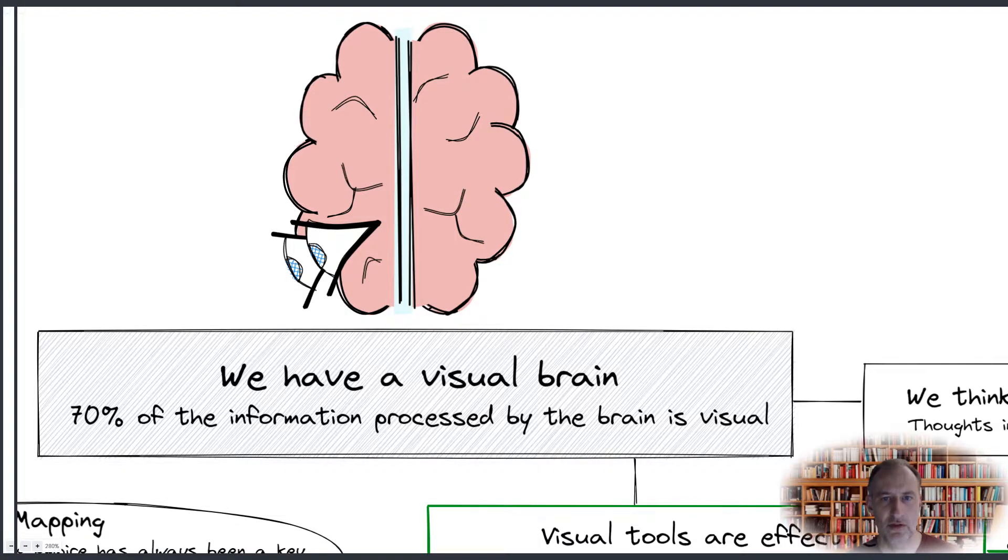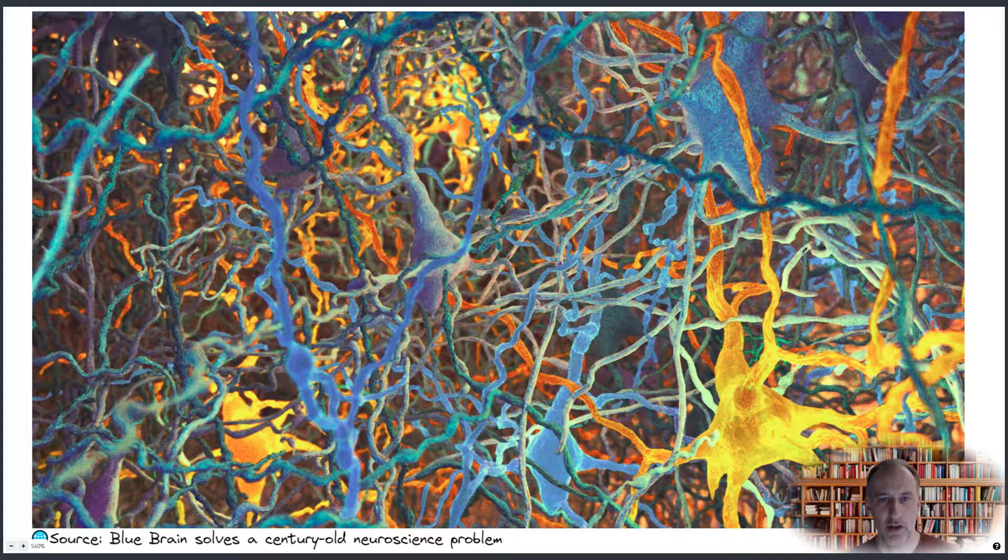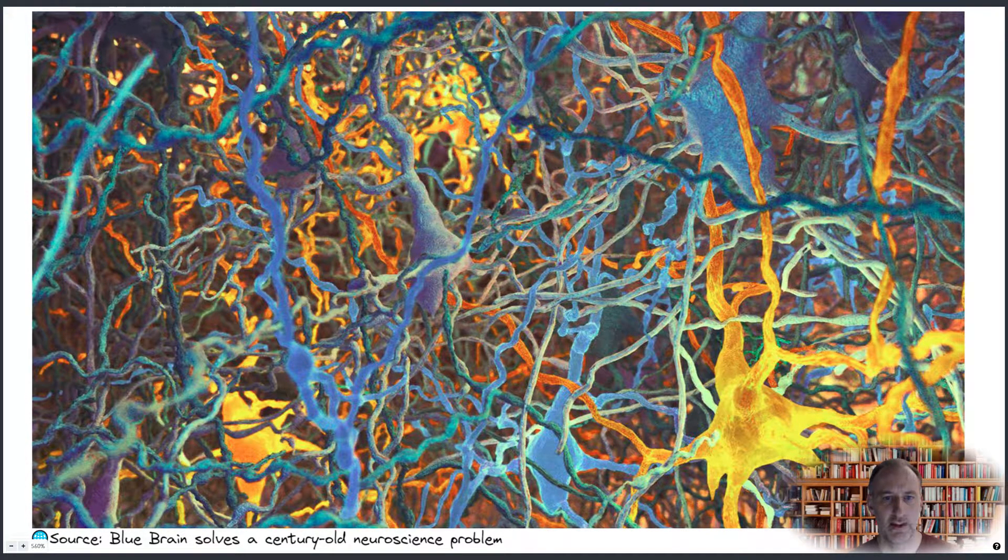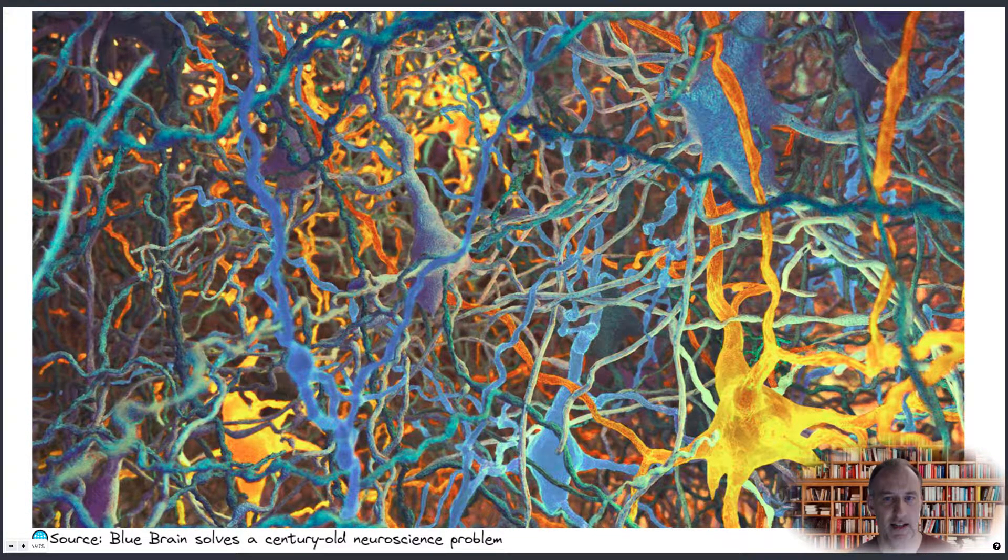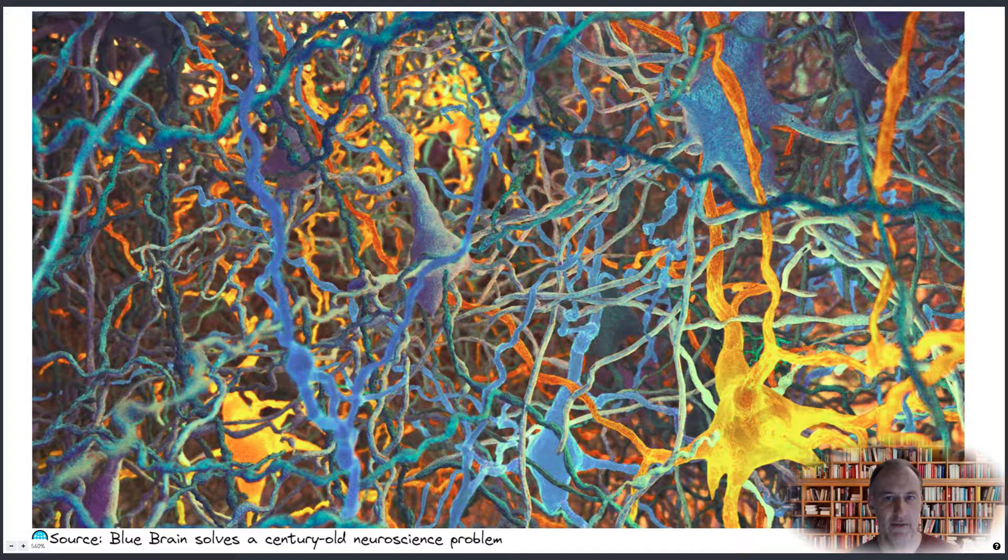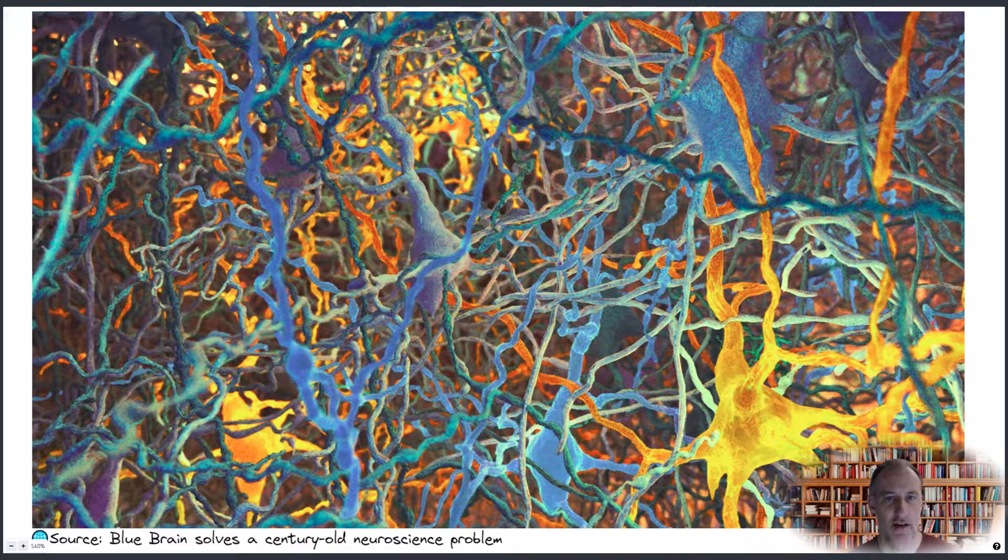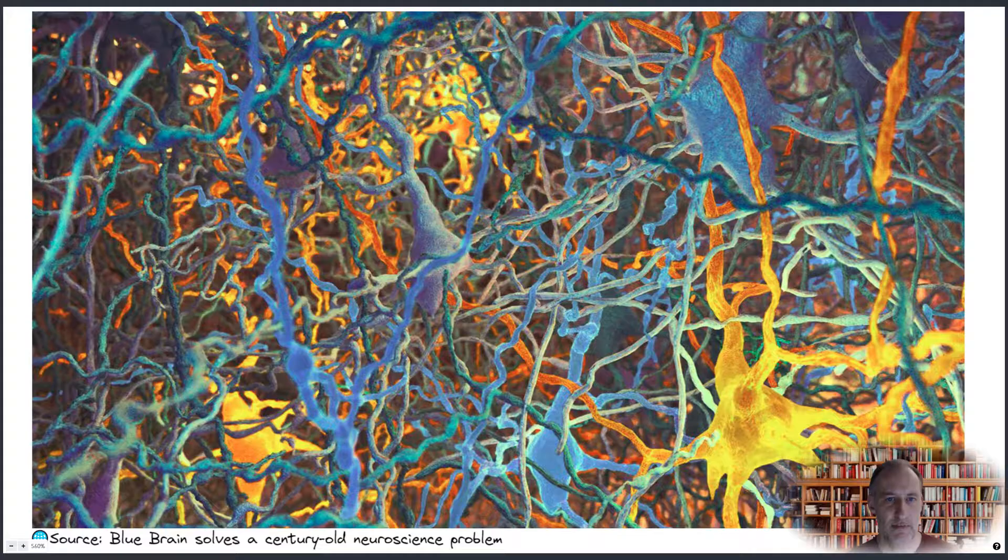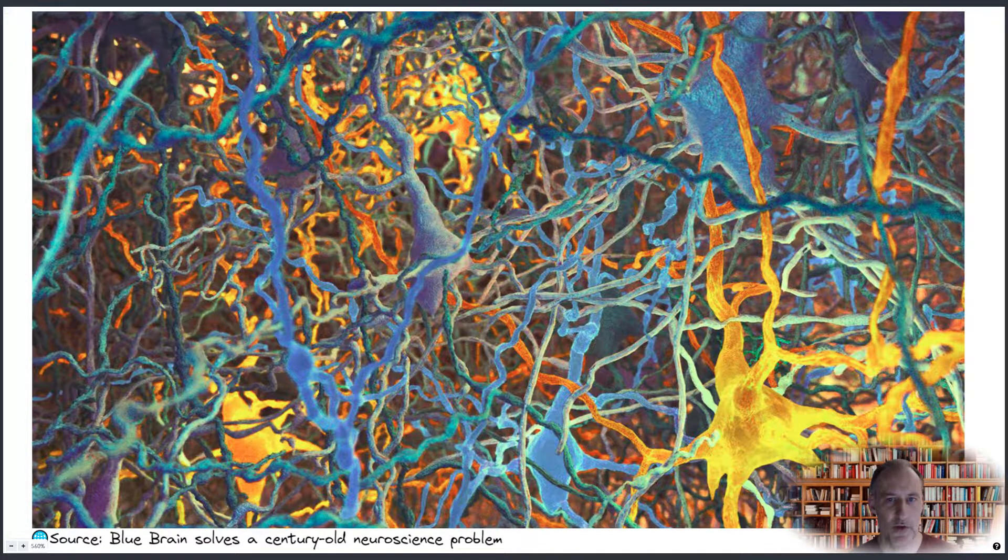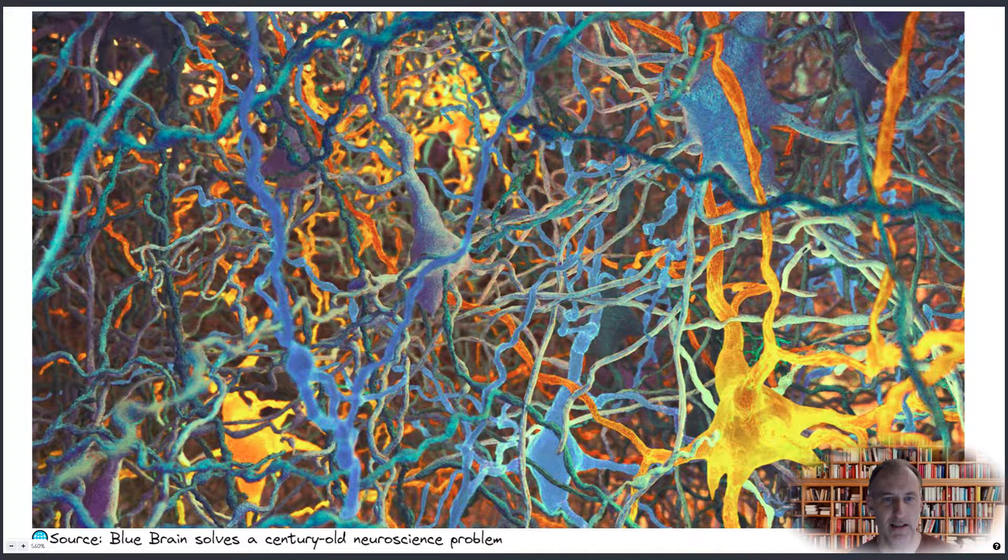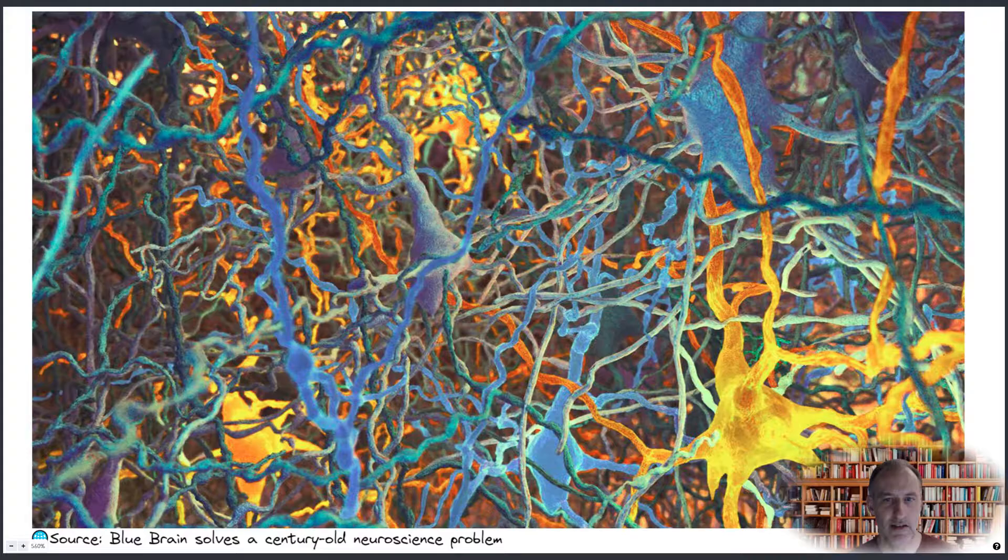Neuroscientists also tell us that the brain organizes information in continuously evolving multidimensional networks and maps. Our brain is transforming information into knowledge by mapping it and by building a network of connections. This is why visual thinking tools that facilitate mapping work so well. They build on capabilities our brain already does so well.